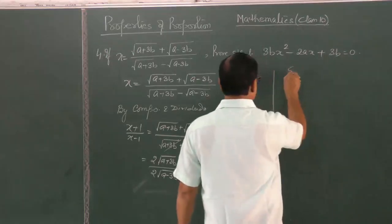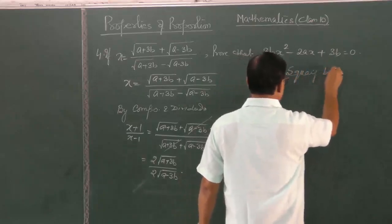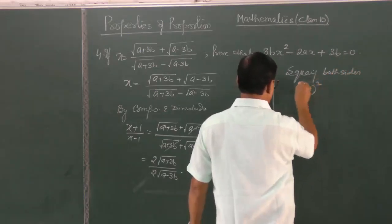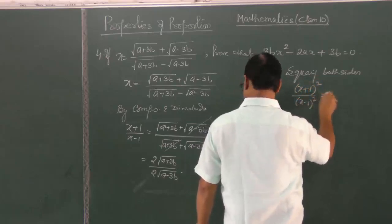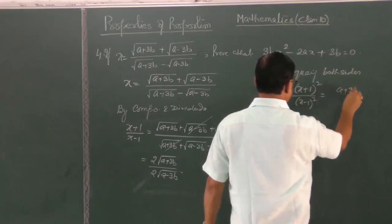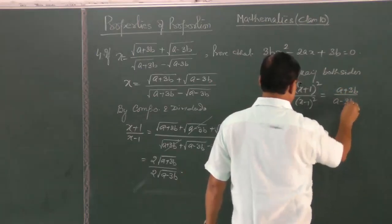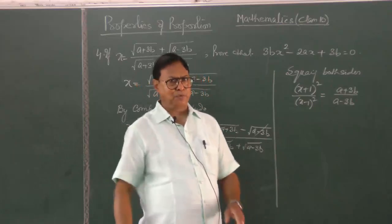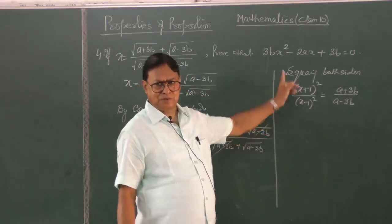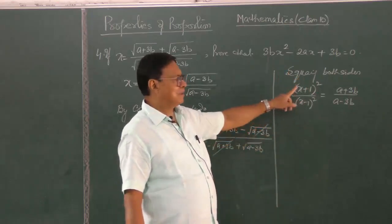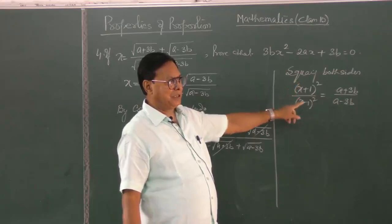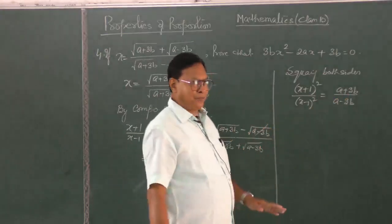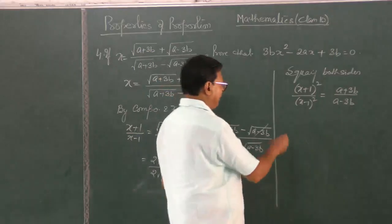Now squaring both sides again. At this stage there are two options. One to expand it and do the cross multiplication. When you expand it you will have six terms all together, you may go wrong anywhere. I am again applying componendo dividendo to make it simpler.